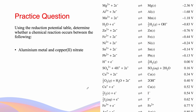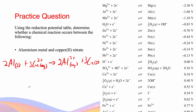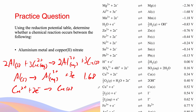Let's look at some practice questions. This question asks us to determine if the chemical reaction will occur between aluminium and copper nitrate. We assume aluminium metal is oxidized and the copper nitrate is reduced. The oxidation of aluminium is the negative of −1.68 V, which is +1.68 V. The reduction of copper is +0.34 V. When we add these values together, we get +2.02 V. This means the reaction will occur spontaneously when we add aluminium into copper nitrate solution.